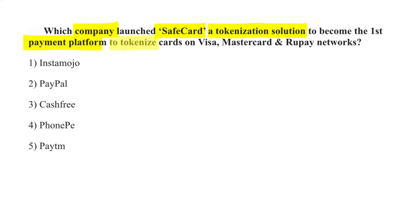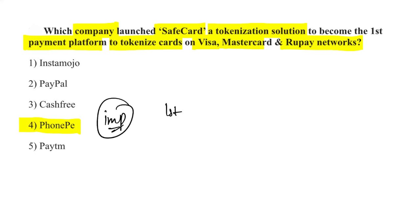PhonePe launched Safeguard, a tokenization solution, becoming the first payment platform to tokenize cards on Visa, Mastercard, and RuPay networks. This is highly important — PhonePe is the first payment platform to tokenize across all three networks.